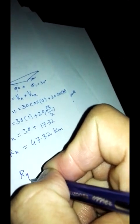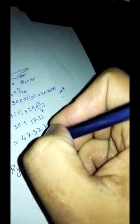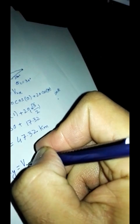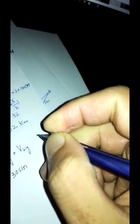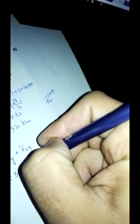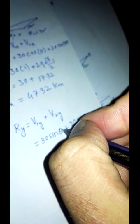Now let's come to the y direction. In y direction we know that Ry equals V1y plus V2y. So V1y will be equal to 30 into sin of 0 plus 20 into sin of 30.